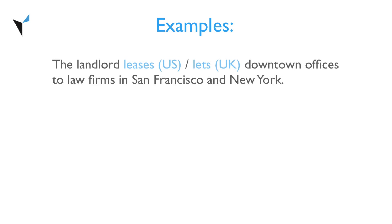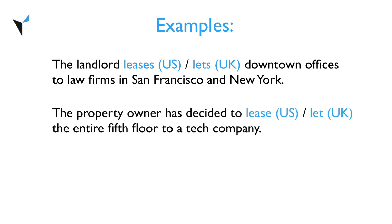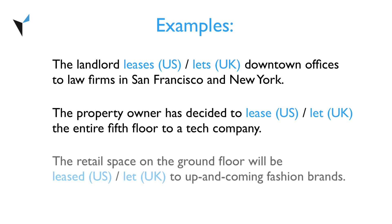So keep in mind that when you communicate with a British business partner, you should use the verb to let, and when you communicate with a US business partner, you should use the verb to lease. Let's take a look at some examples. The landlord leases or lets downtown offices to law firms in San Francisco and New York. The property owner has decided to lease or let the entire fifth floor to a tech company. The retail space on the ground floor will be leased or let to up-and-coming fashion brands.